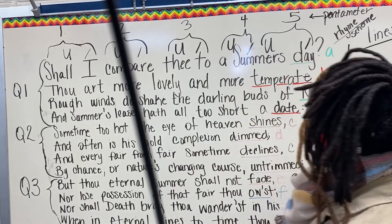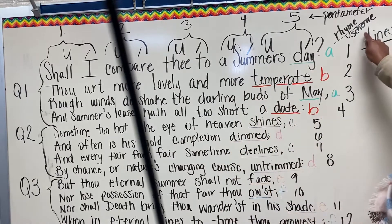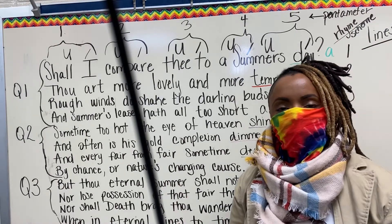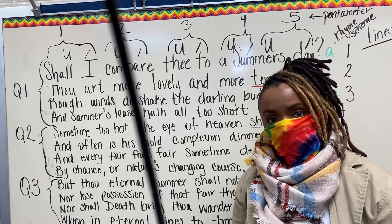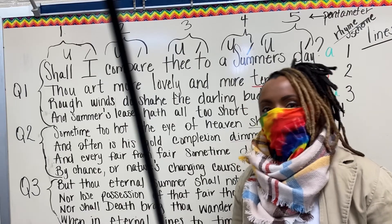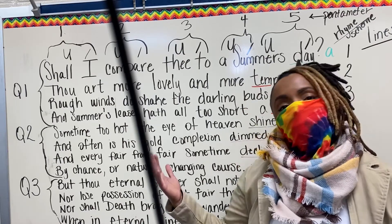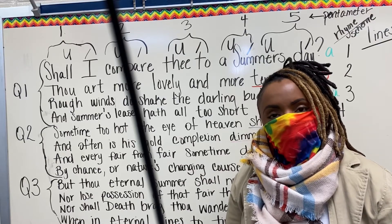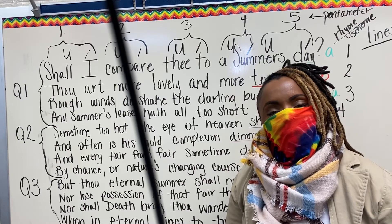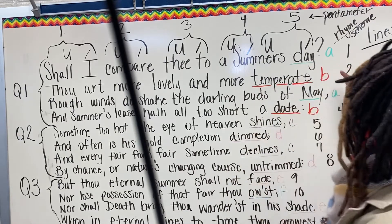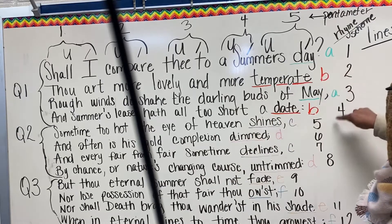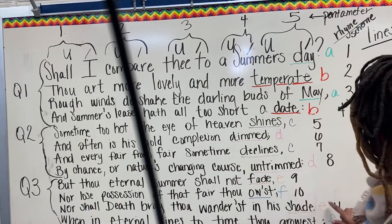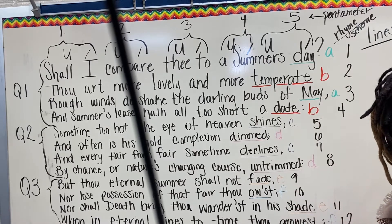Next we have the rhyme scheme. And every sonnet by Shakespeare — Shakespearean sonnets — uses the same exact rhyme scheme. He does not deviate from it. And that rhyme scheme is A, B, A, B, C, D, C, D, E, F, E, F, G, G.